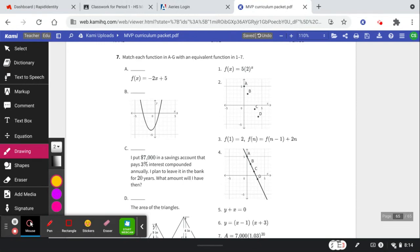Just like you practiced in the retrieval, we need to match functions A through G with equivalent functions 1 through 7. For example, if I look at this explicit function, see how it begins at 5 and it's multiplying by 2?